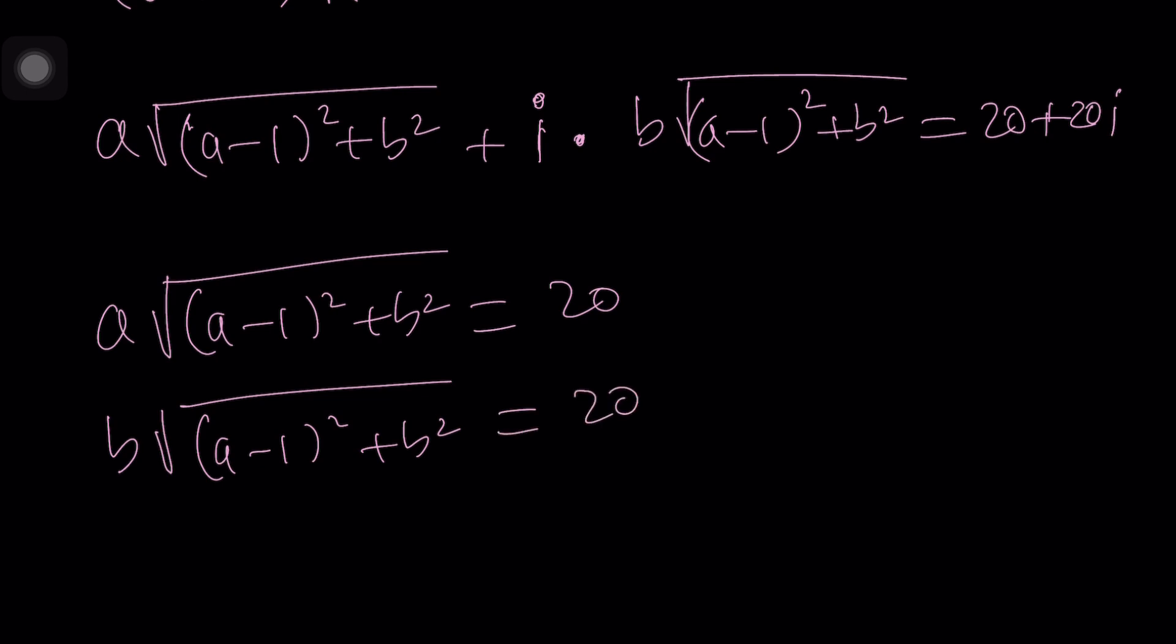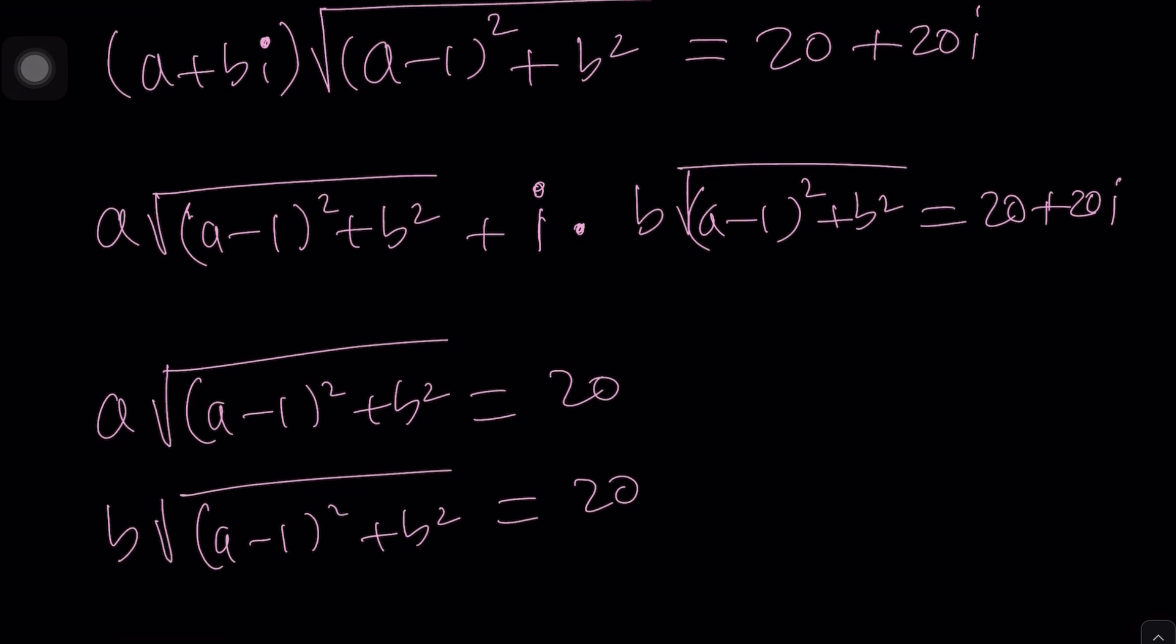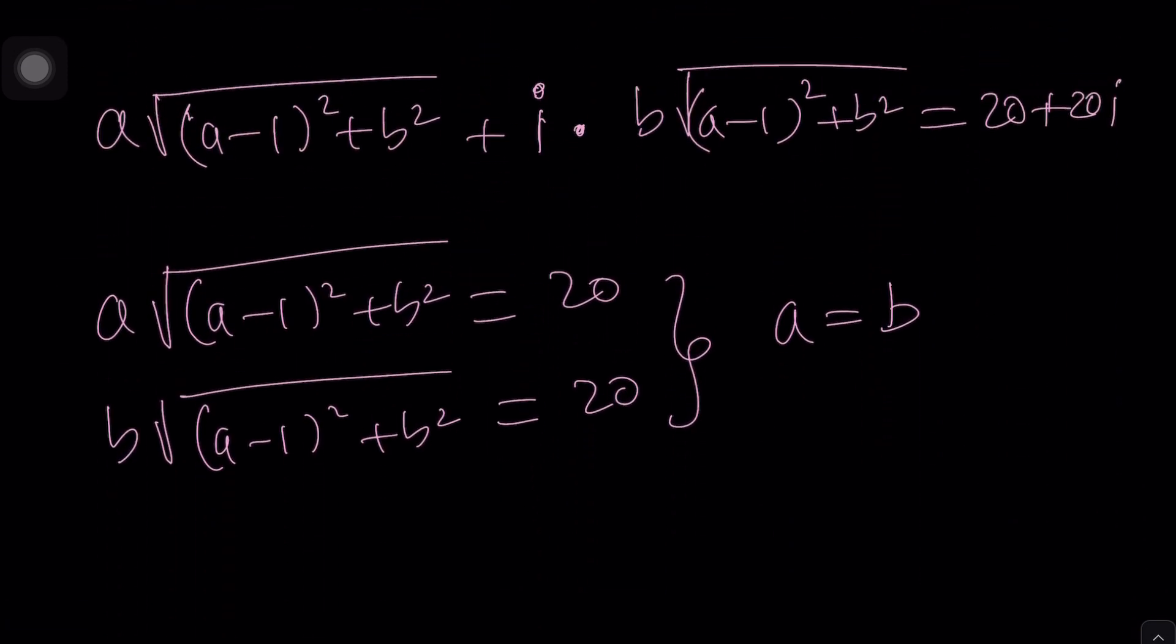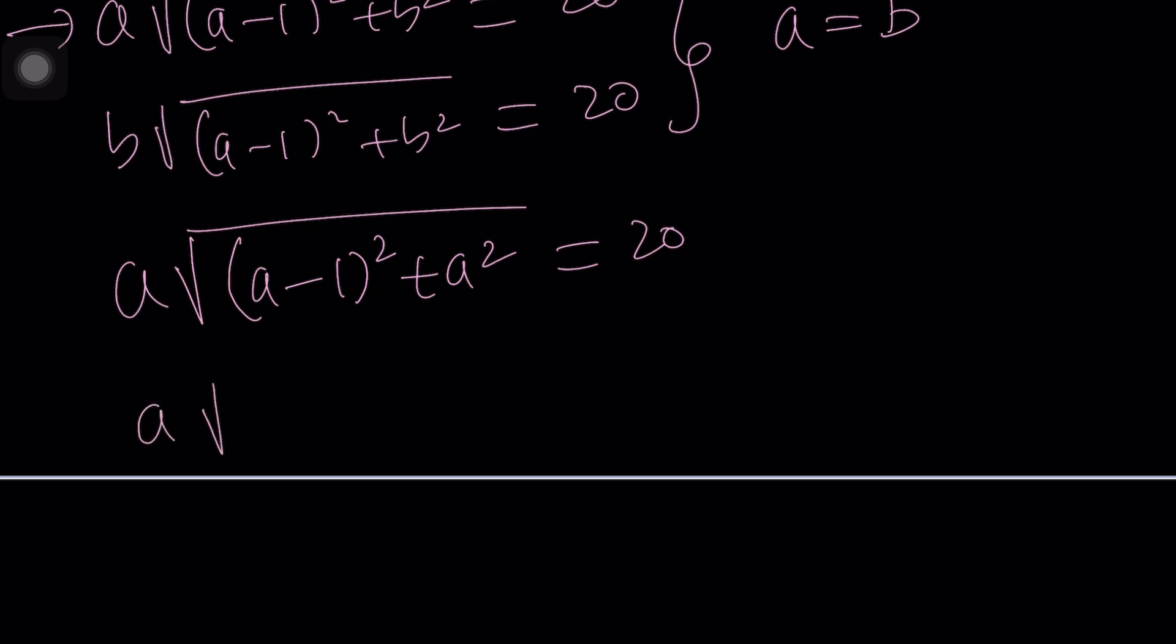Since the radicals are equal, does this mean that a is equal to b? Looks like it. So let's set a equal to b. If a and b are equal then I can replace b with a or a with b. Let's take the first equation: a times the square root of (a-1)² + a² equals 20. From here we just need to solve the resulting equation.